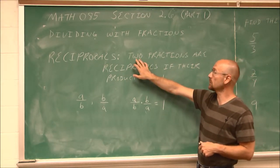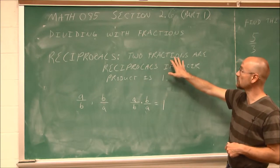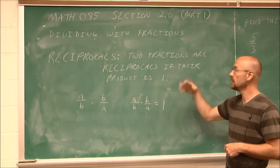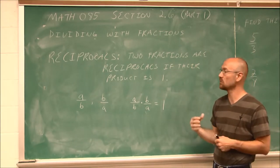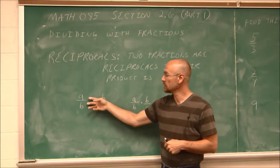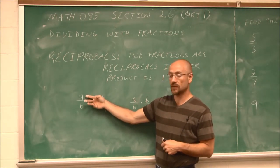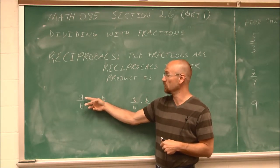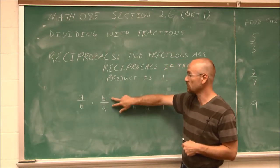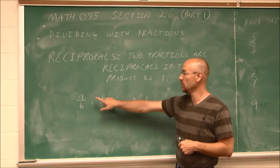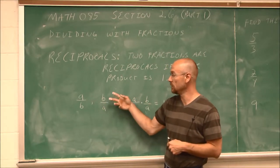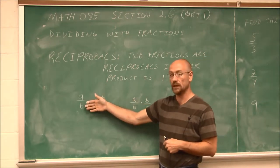But before we do that, we have to define a reciprocal. It's a tool we're going to use to divide fractions. Two fractions are reciprocals if their product is 1. A reciprocal means if we have a fraction, for example a numerator over a denominator, its reciprocal is essentially just flipping them, making your numerator the denominator and your denominator the numerator. So we have b over a instead of a over b.